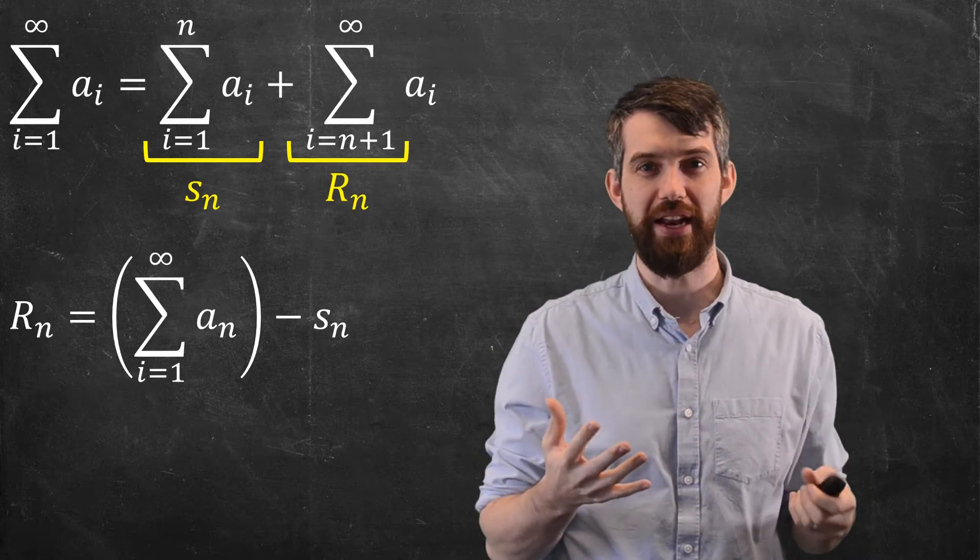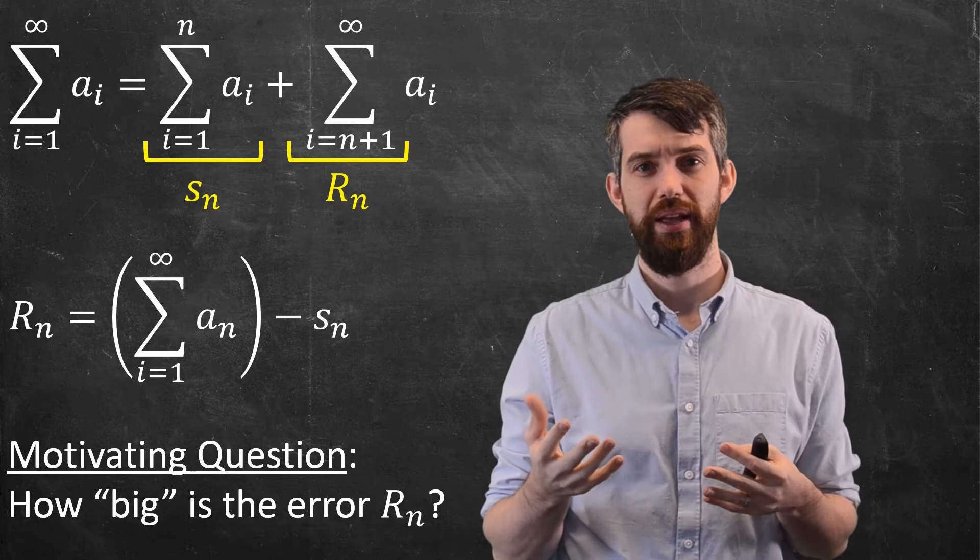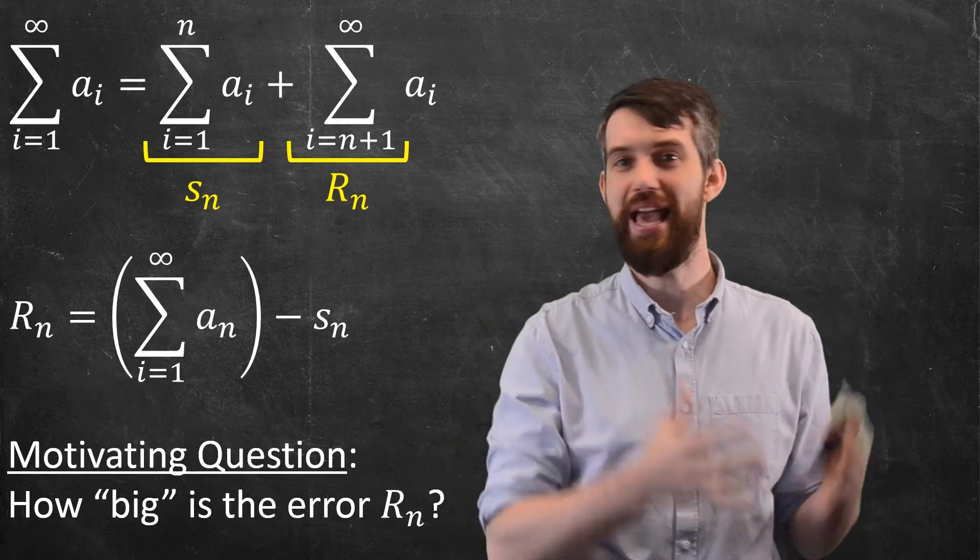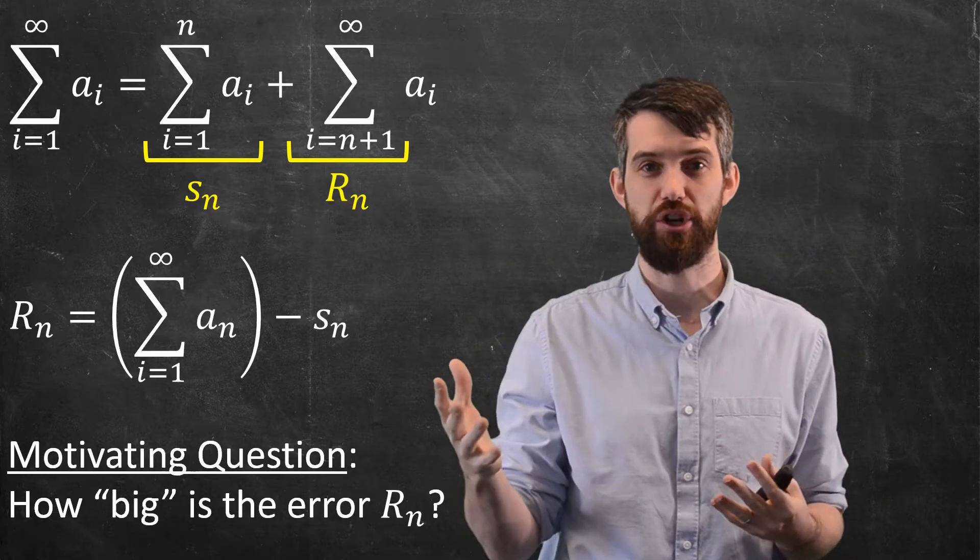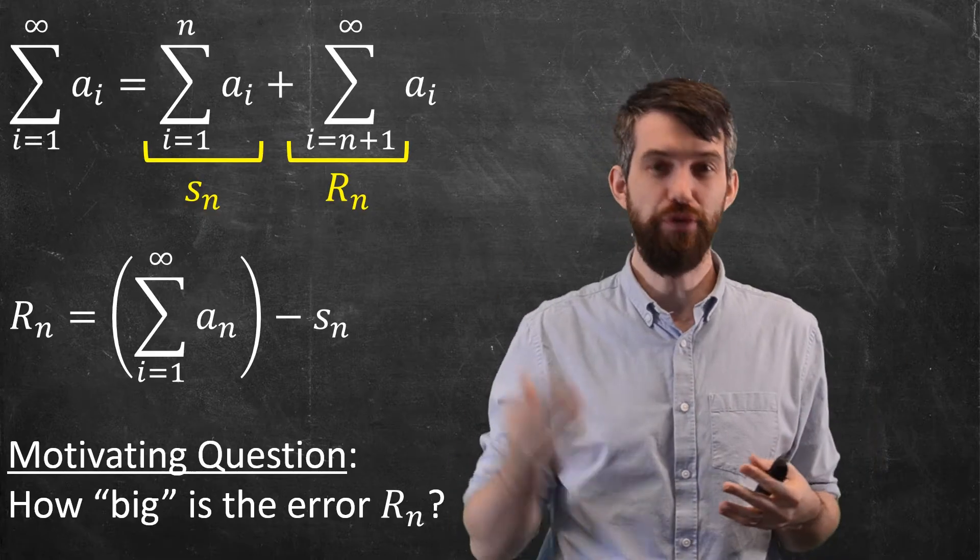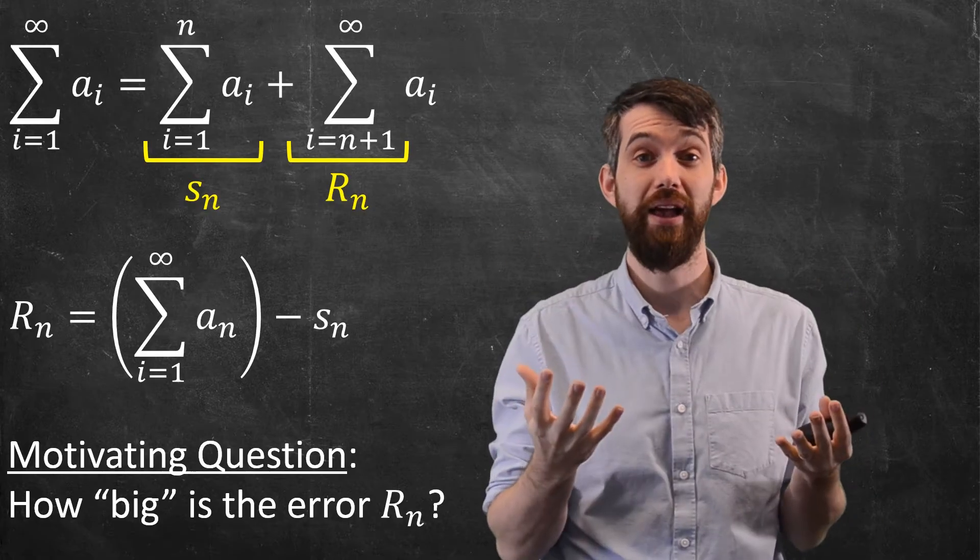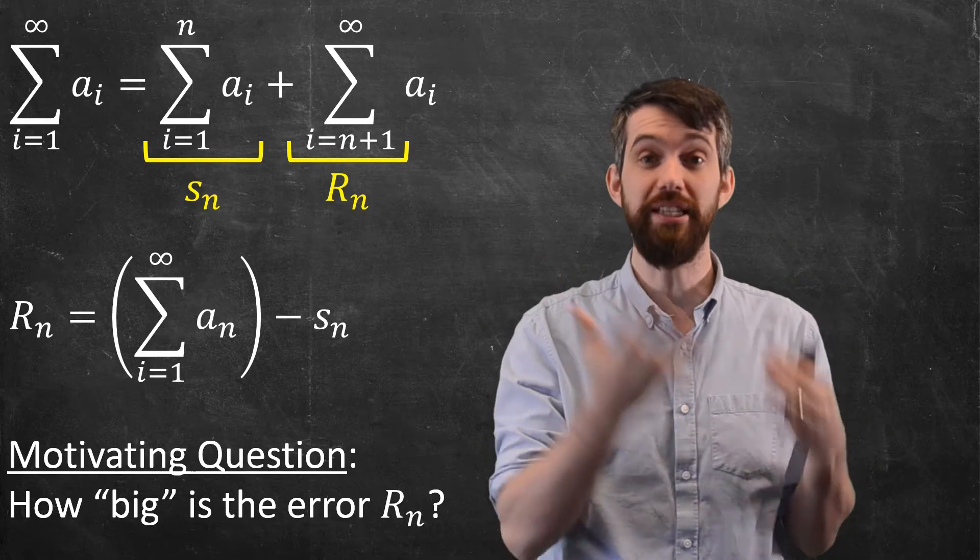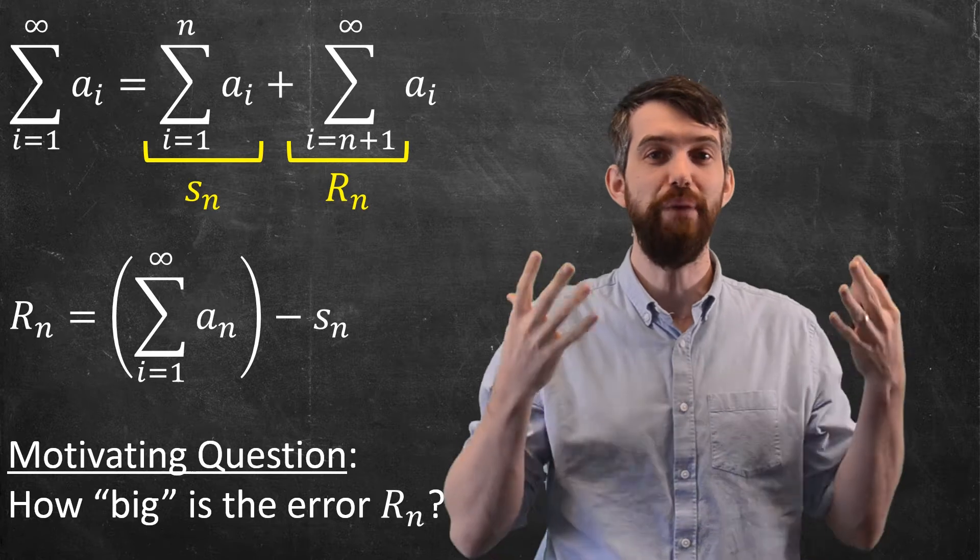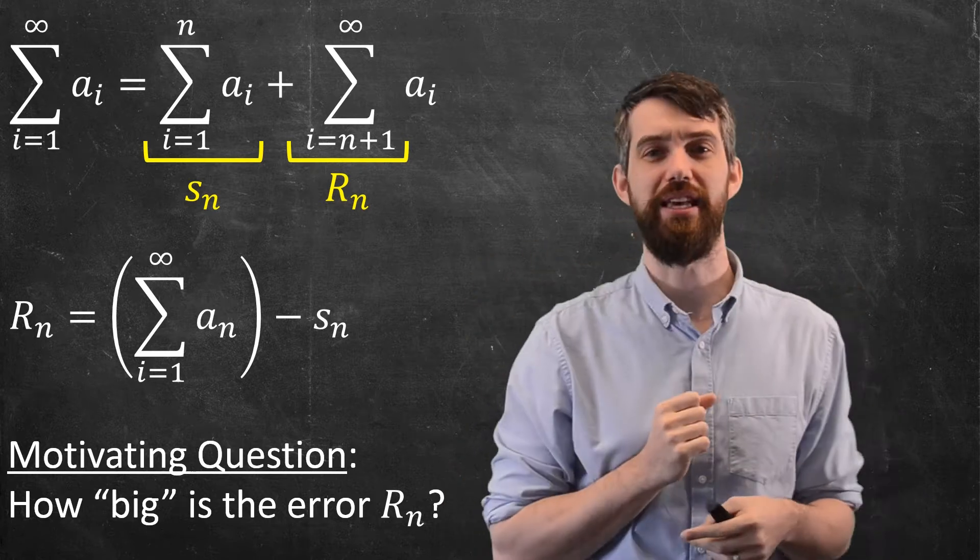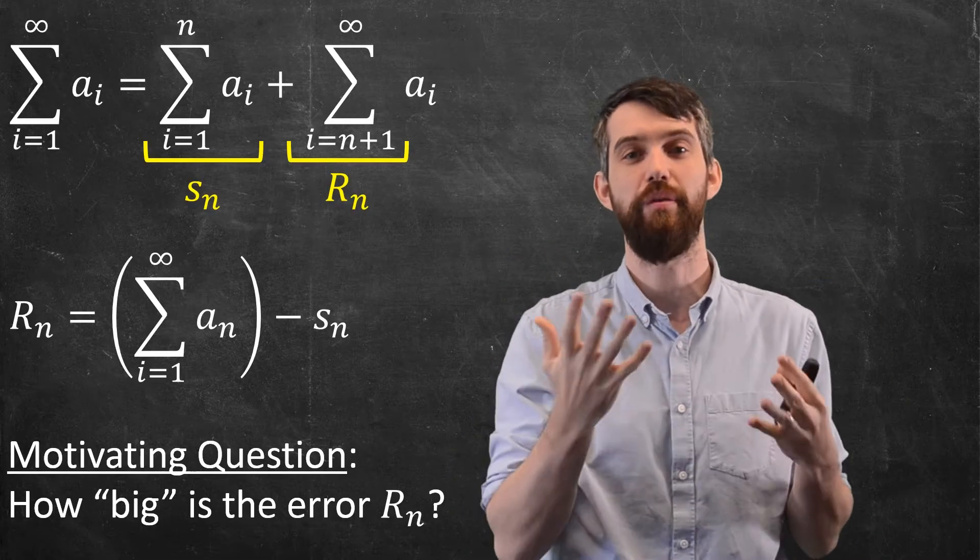So the question that's really going to motivate us is how big is this error term, this remainder term? Imagine you compute out S10, or S100, or S1 million, you add up the first million terms. A computer can do that. The question is, you've got some value, and is that value really close to the thing it converges to, or is it really far away? The answer to that question might depend on your specific discipline and the standards of uncertainty you're allowed to have.